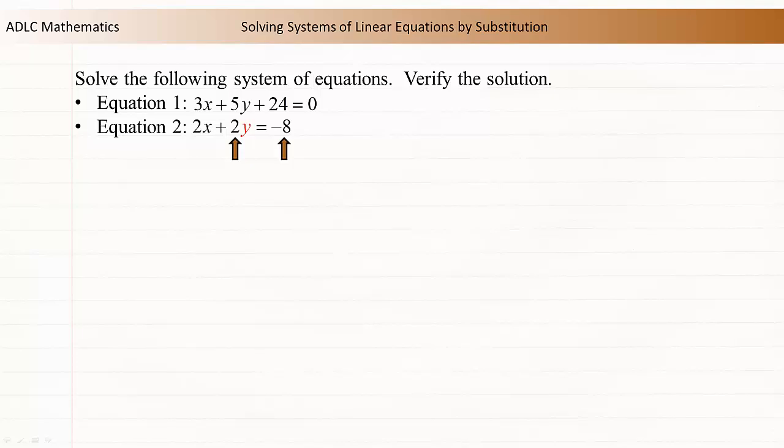Please note that this is a different solution strategy than the one used in lesson 8.2. Subtract 2x from both sides of the equation to isolate the term containing y. Divide both sides by 2 to isolate y. Now we know y = -4 - x.